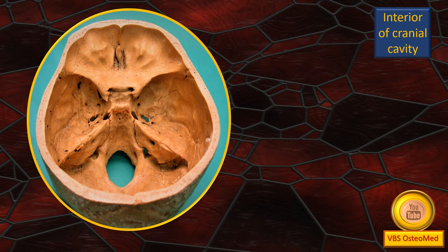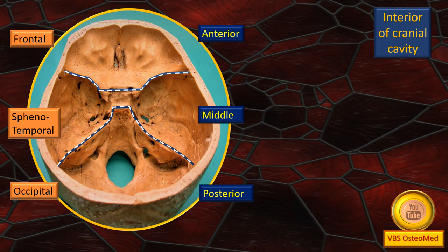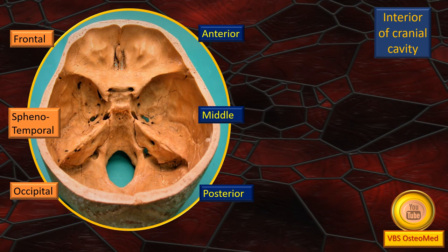This is a slide borrowed from the previous video. The blue-white dotted line roughly demarcates the interior of the cranial cavity into an anterior, middle, and a posterior area or zone. This more or less corresponds to what we discussed in the base of skull. We could also call it frontal, sphenoparietal, and occipital instead of anterior, middle, and posterior.